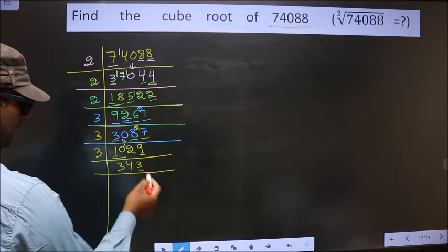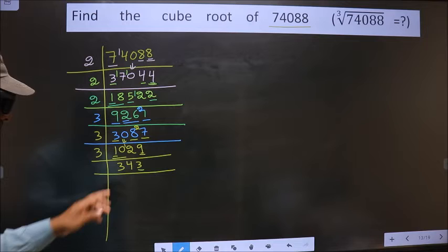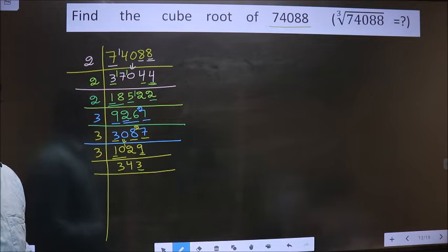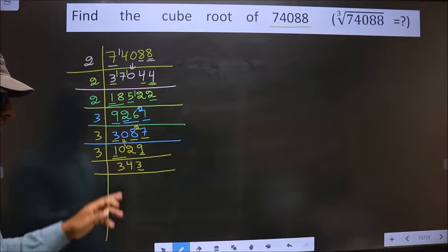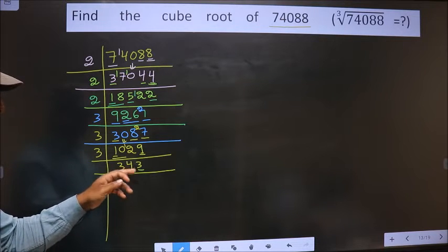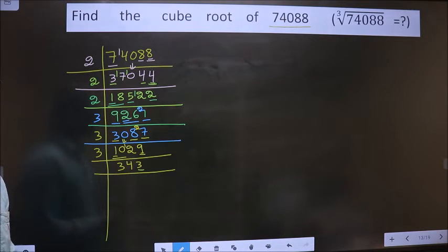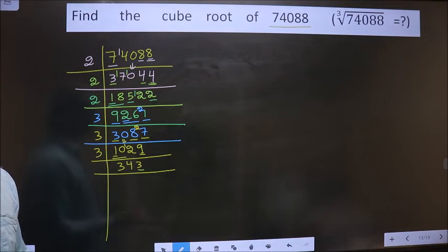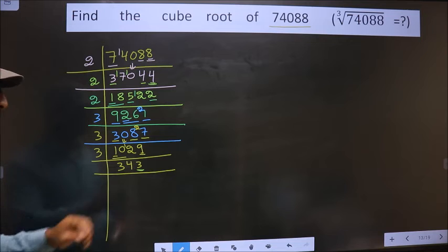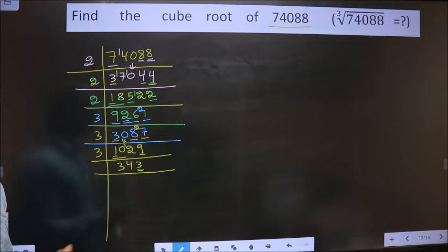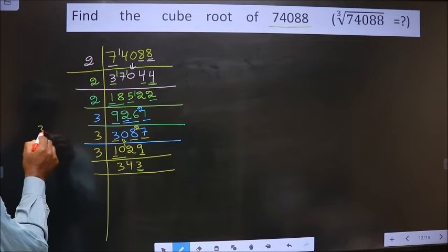The last digit is 3, which is not even, so not divisible by 2. Next prime number is 3. Adding the digits: 3+4+3=10. 10 is not divisible by 3, so this number is not divisible by 3. Next prime number is 5; the last digit is neither 0 nor 5, so not divisible by 5. Next prime number is 7.